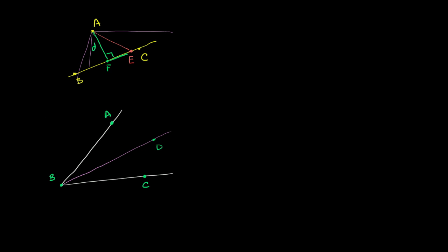so if angle DBC is equal to angle DBA, we can say that DB bisects angle ABC. And now I'm talking about segment DB — we could have made it a ray if we made it keep going to the right, or a line. DB bisects angle ABC.